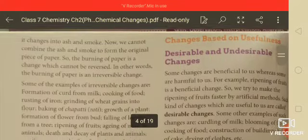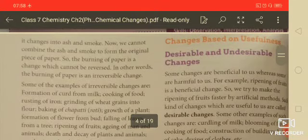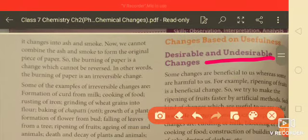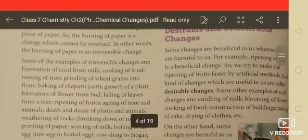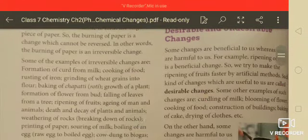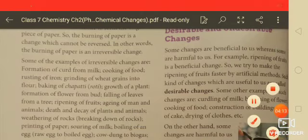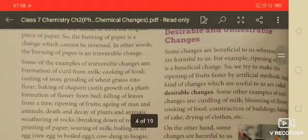Next: desirable and undesirable changes. Some changes are beneficial to us, whereas some are harmful to us. For example, ripening of fruits is a beneficial change. We try to make the ripening of fruits faster by artificial methods. Such changes which are useful to us are called desirable changes.